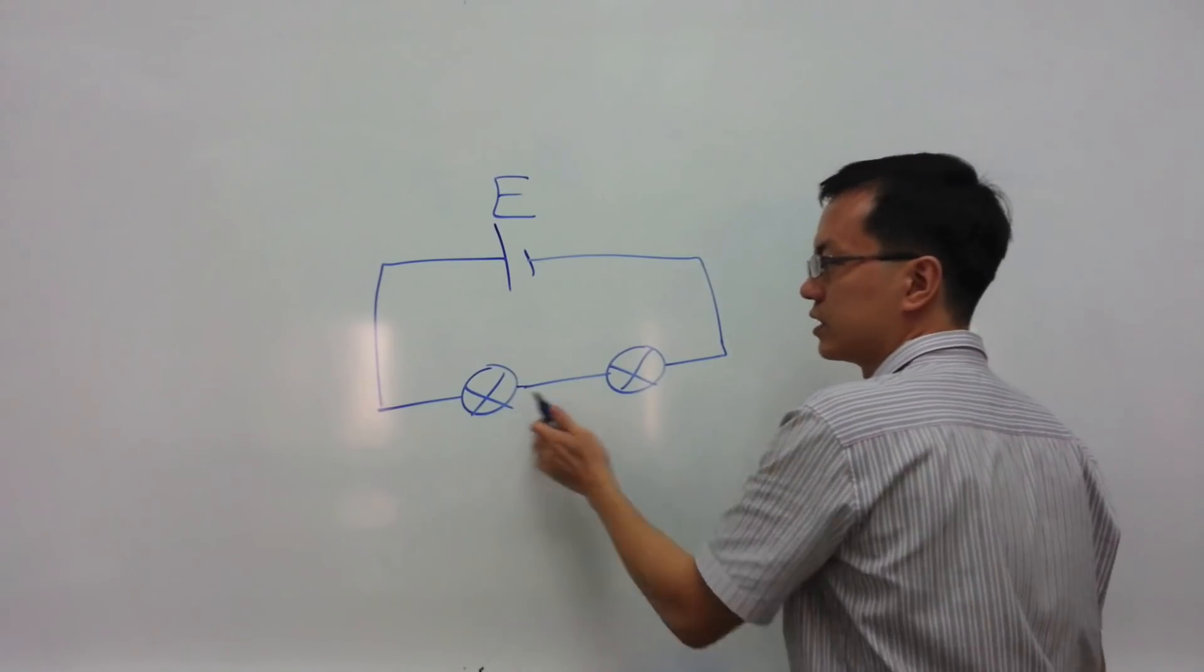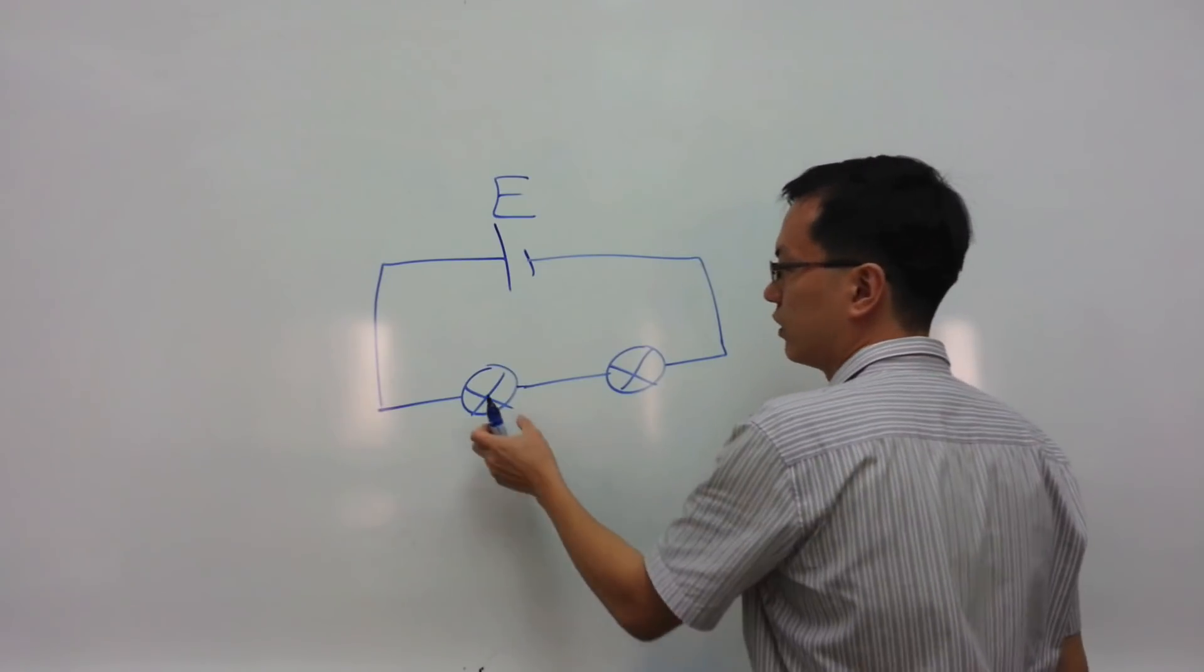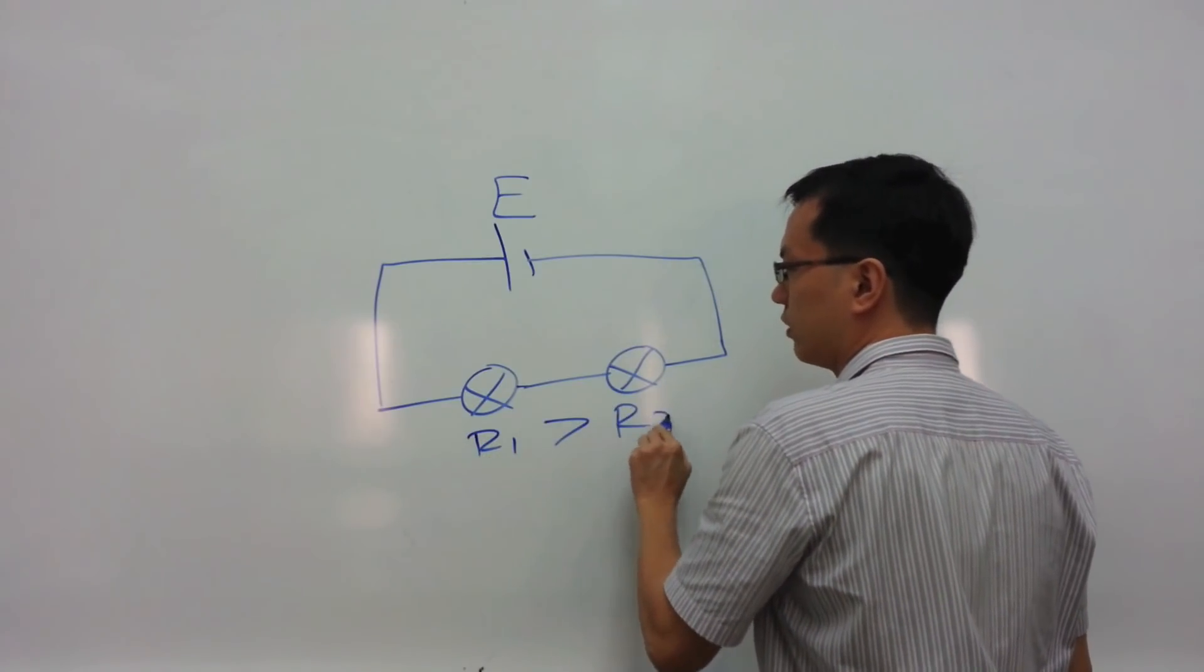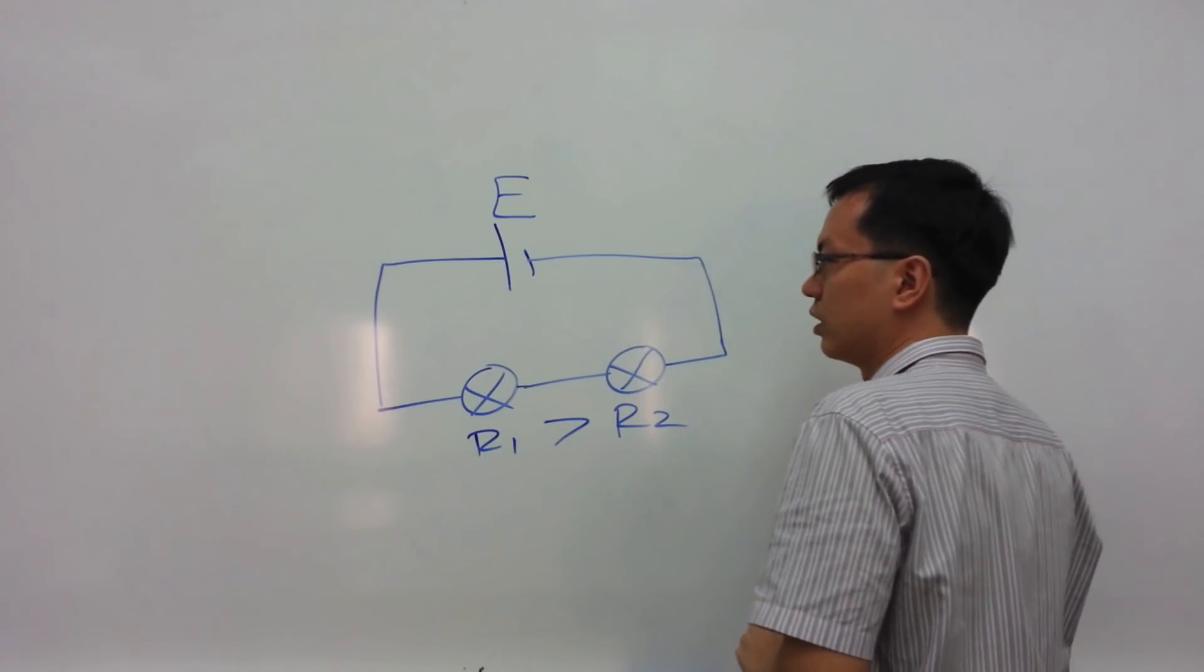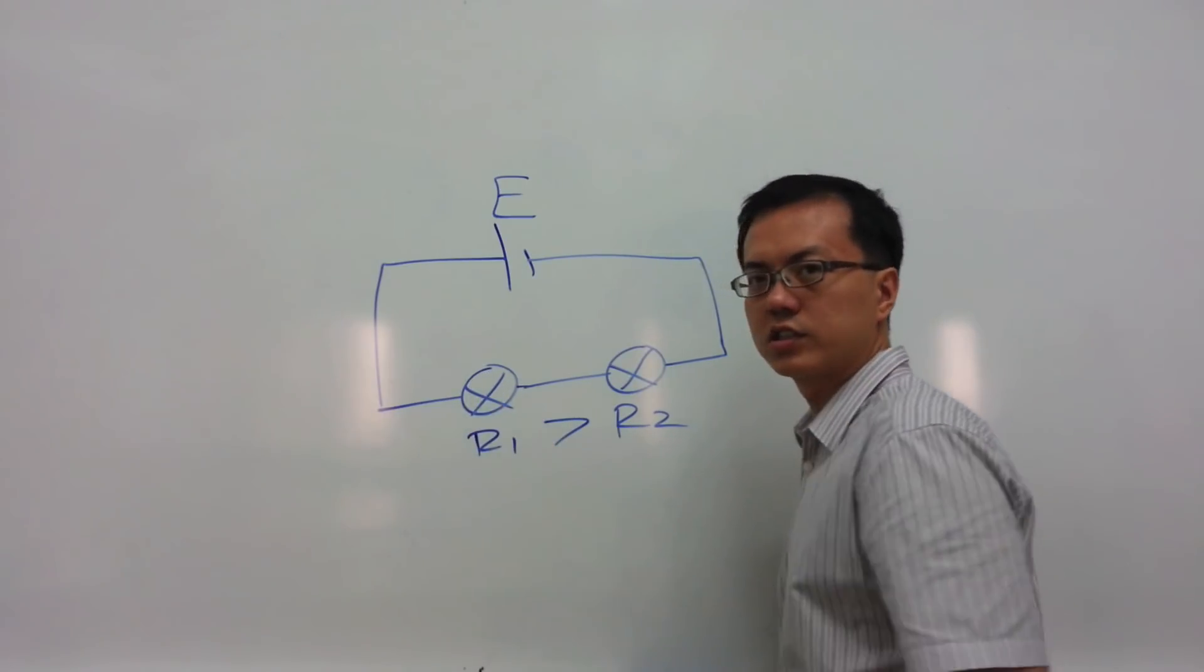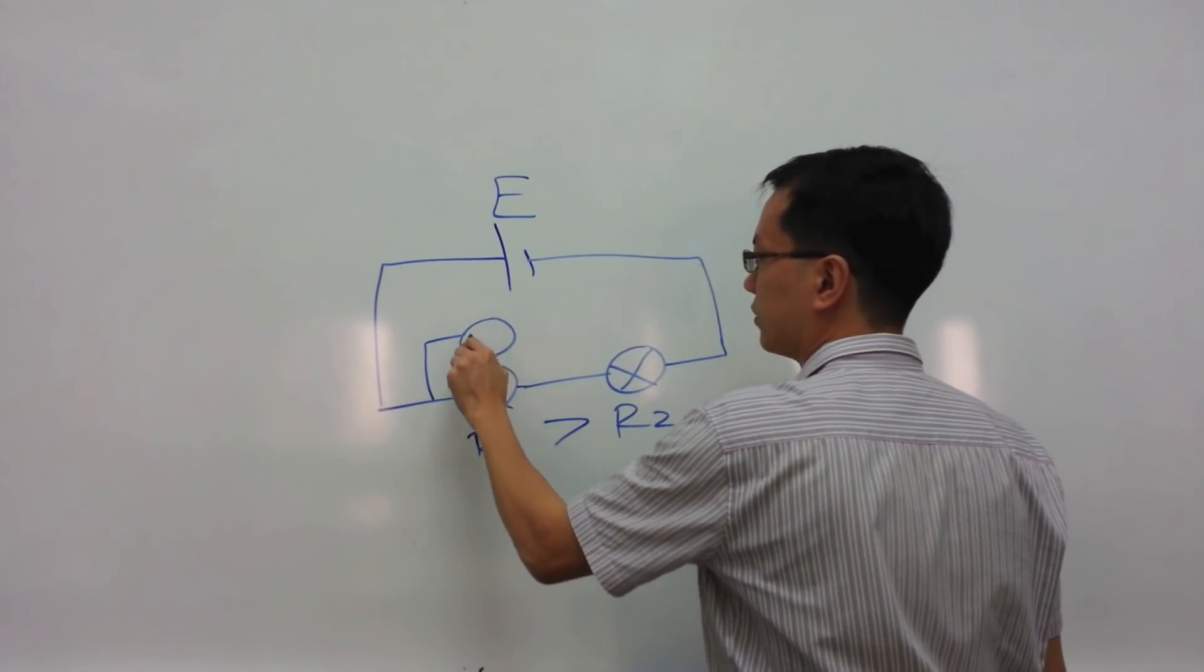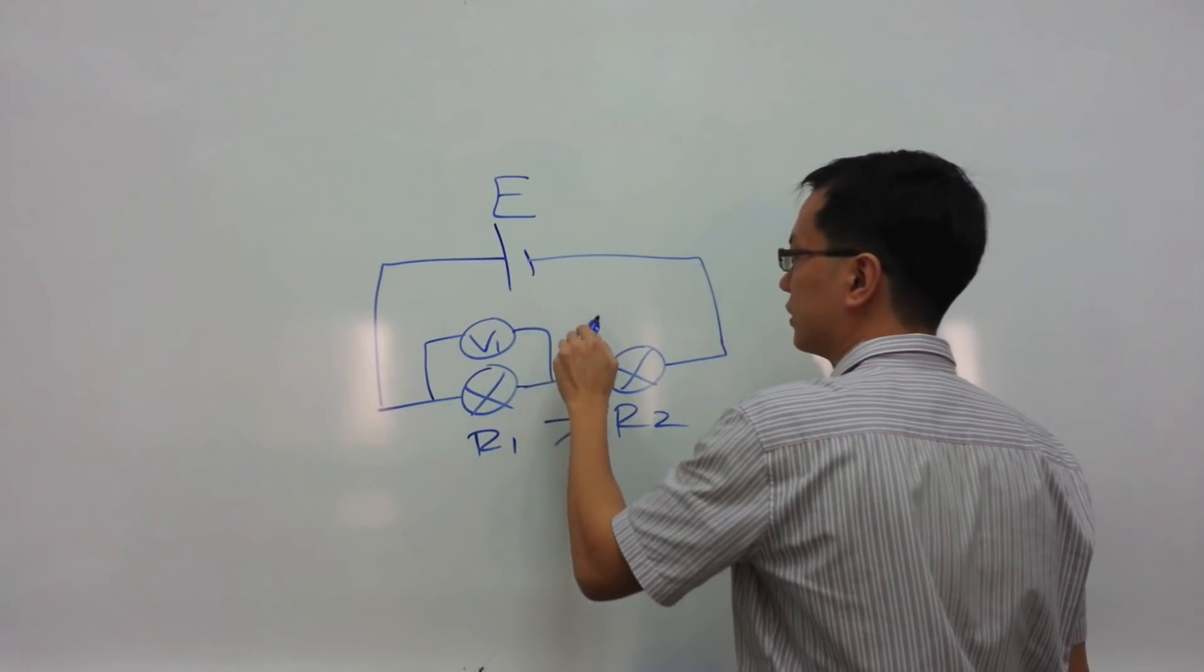depending on the resistance of the light bulb, if this resistance is bigger, if R1 is bigger than R2, then the potential difference across this light bulb will be bigger. So B1 will be greater than B2.